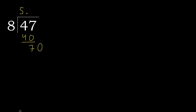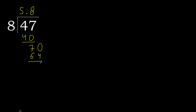Bring down 0 to get 70. 8 multiplied by 9 is greater, so try multiplied by 8 — 64 is not greater. Subtract: remainder is 6.